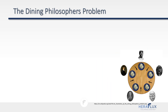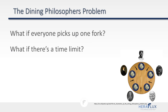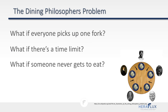Several things can go wrong depending on the implementation. If everybody picks up one fork, nobody can pick up a second — we've created a deadlock. We need solutions for releasing resources so some can eat now and some later. There's also the issue of a time limit: if you can't acquire a second fork in time, you have to put the first one down. And if someone never gets to eat, that's resource starvation — a real problem in computing concurrency as well.